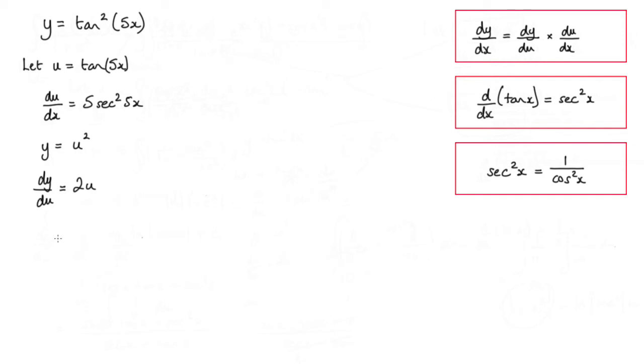Now we're trying to find dy by dx. So dy by dx using the chain rule is dy by du times du by dx. And dy by du is 2u. And we're going to multiply that by du by dx, which is 5 sec squared 5x.